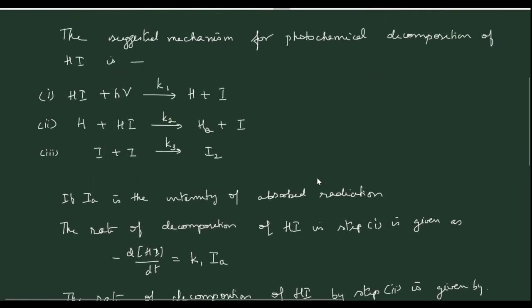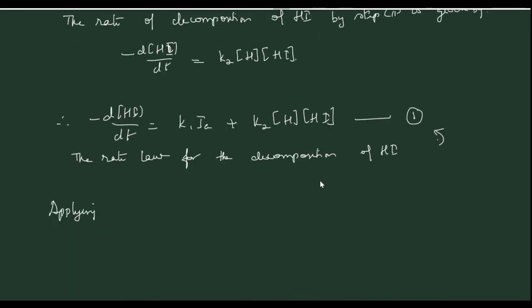In the first and second steps, an intermediate H is formed in the first step and consumed in the second step. A stage is reached when the rate of formation of H by step 1 becomes equal to its consumption by step 2. We can therefore apply steady-state approximation to the concentration of H. At steady state, d[H]/dt = 0, meaning the concentration of H becomes constant because its rate of formation equals its rate of decomposition.